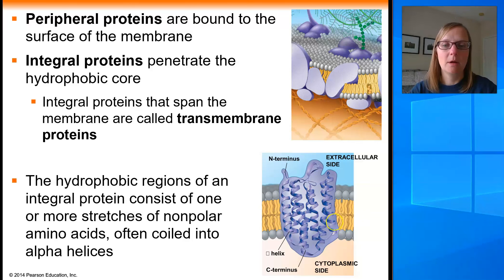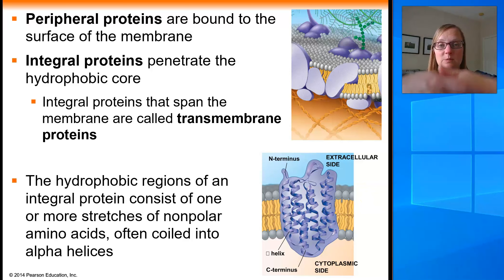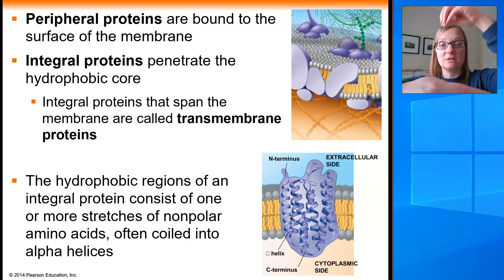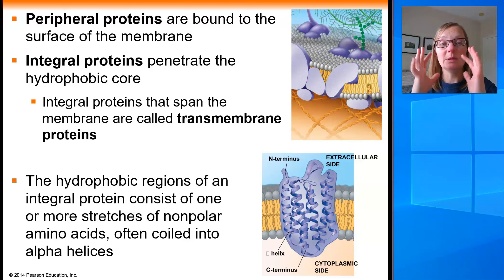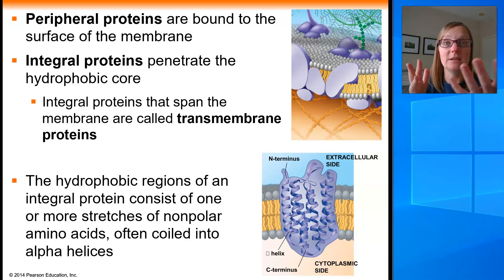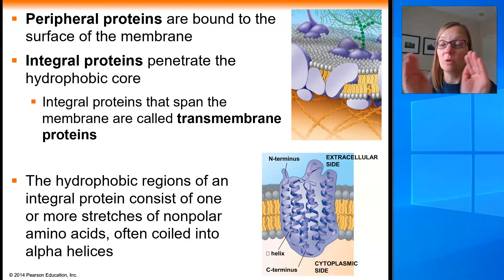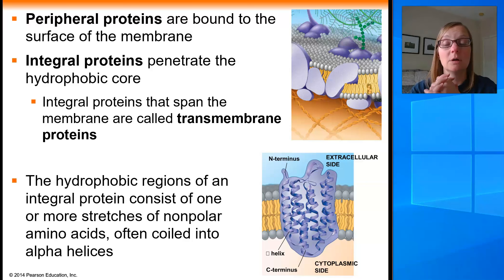What if this transmembrane protein were an aquaporin? Imagine a big donut — the protein creates a safe passageway through the center for water to move across the hydrophobic parts of the membrane. The pore in the middle of this membrane protein must be lined with amino acids that play nice with the water moving through it. So the inside core of that protein should also be made of hydrophilic or polar amino acids.